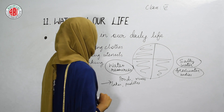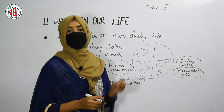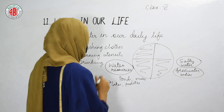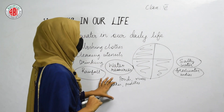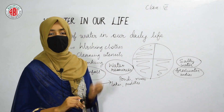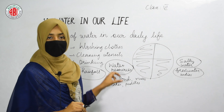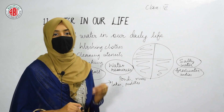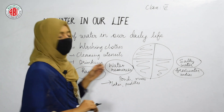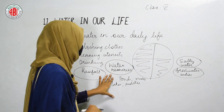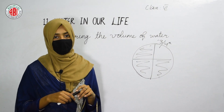We can get fresh water from these water resources. The main source of water is rainfall. Depending upon the rainfall, the water level of all these water bodies can be measured. During the rainy season, the water level of all these water reservoirs increases, but in the summer season, due to the heat of sunlight, the water level of all these water reservoirs goes down.